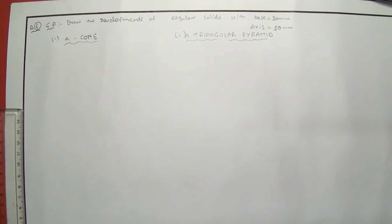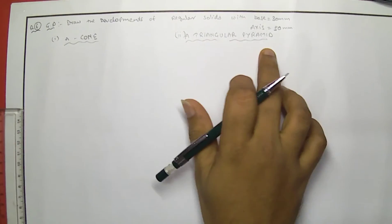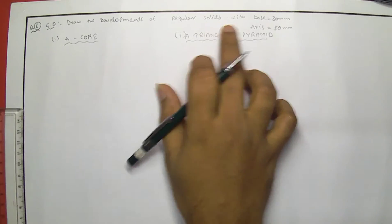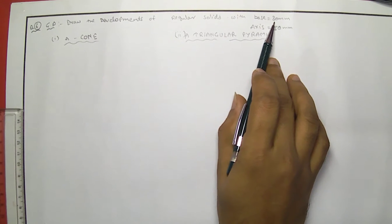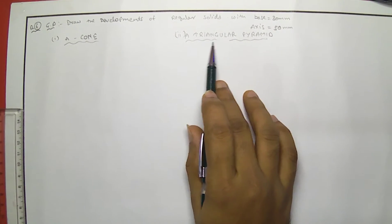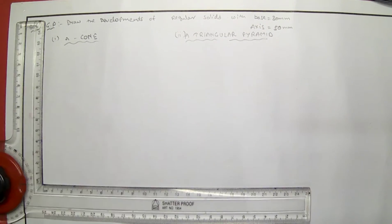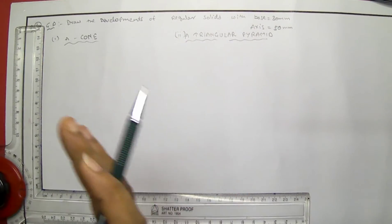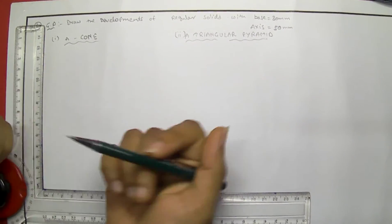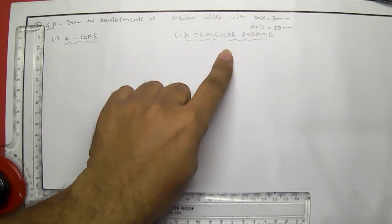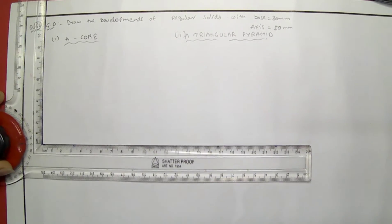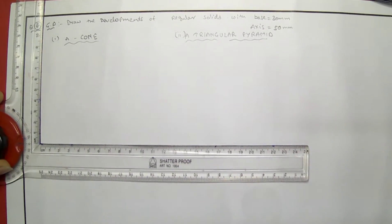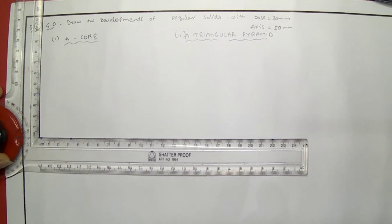Now we are going to discuss simple developments of a cone and a triangular pyramid with base 30 mm and axis 50 mm. For the cone, I am considering the base has a diameter, and for the triangular pyramid, I am considering the side as 30 mm, axis 50 for both. So for the developments, first we have to construct normal orthographic projections of these cones and pyramids, then we can reproduce the developments.